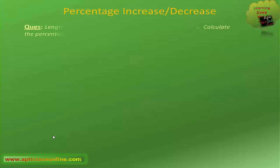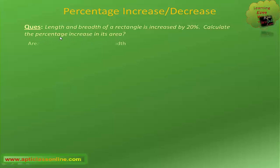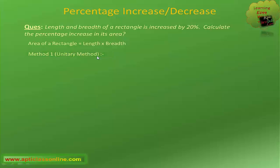Now let's use these concepts to solve this question. The question says: length and breadth of a rectangle are increased by 20 percent — calculate the percentage increase in its area. We know that area of a rectangle equals length times breadth. We will solve this using the unitary method, which is widely used to solve such questions. In the unitary method, we consider length and breadth both to be 1 initially, so the initial area is also 1. Now we will increase the length and breadth as given in the question.